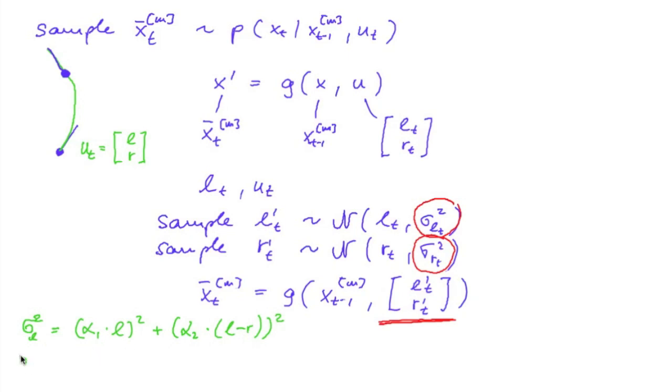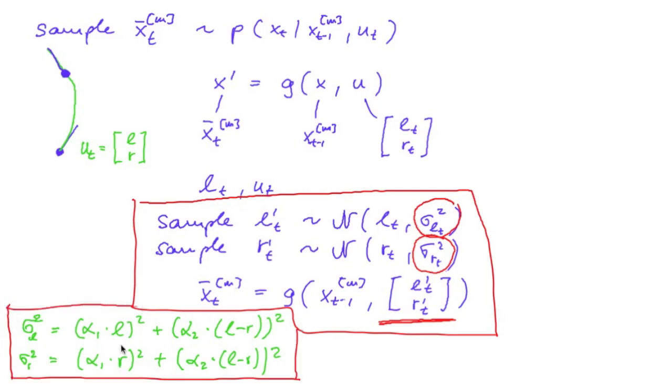And the same for the right variance. And so this is all there is to compute the left and right variances, use those to sample the left and right control, and then compute the new particle from the old particle by applying the exact movement formula using the sampled control.